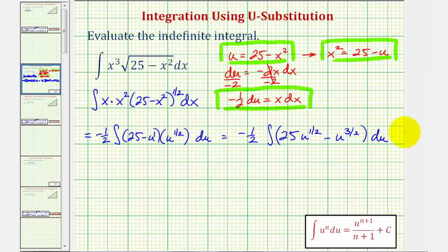And now we'll find the antiderivative with respect to u, then we write it in terms of x. So we'll have negative one-half times 25 times, the antiderivative of u to the one-half would be u to the one-half plus one, that's u to the three-halves divided by three-halves. But instead of dividing by three-halves, let's multiply by two-thirds. So we'd have u to the three-halves and then times two-thirds,